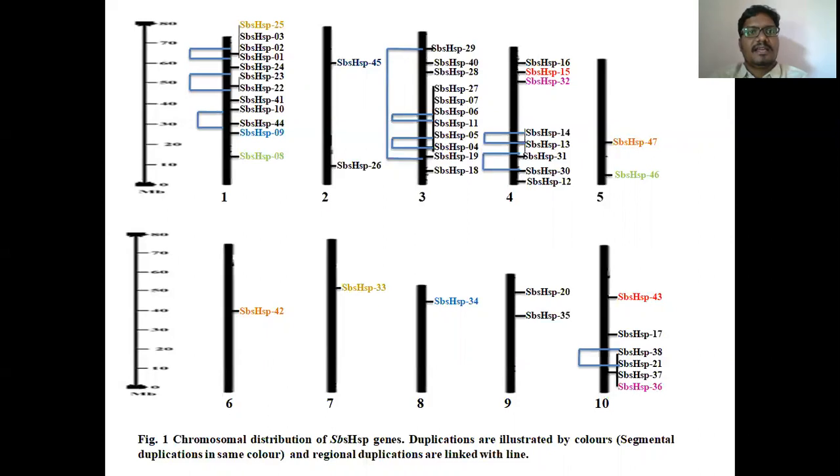Coming to the results, we had mined almost 47 genes from sorghum. And this particular slide represents the chromosomal localization of various heat shock proteins. Some are represented in similar color; color-wise, they do come under segmental duplications. And this particular lines or the barbed lines, they represent the regional duplications. So the location of SbHSPs has been found on all the chromosomes.